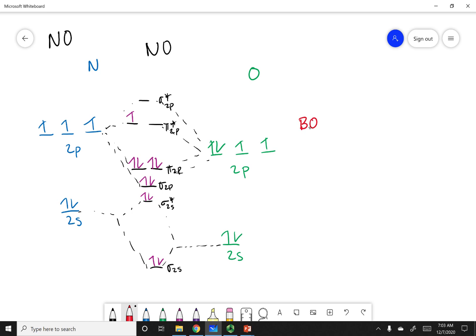So I can go ahead and calculate my bond order. What I can see is that I have 8 bonding electrons, 3 antibonding electrons, and I'm going to divide that by 2. So I get a bond order of 2.5. Now, let's go ahead and see the beauty of MO theory.